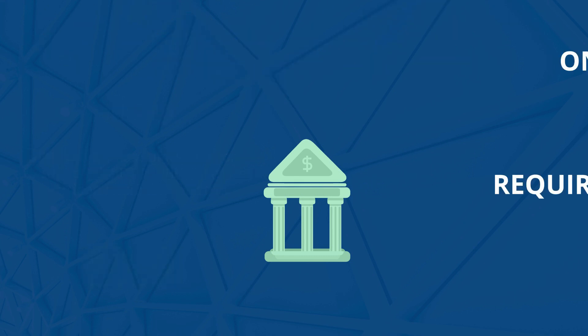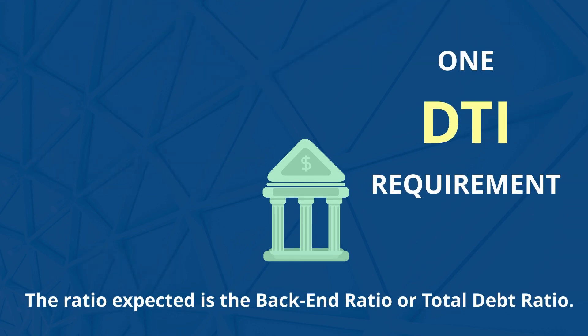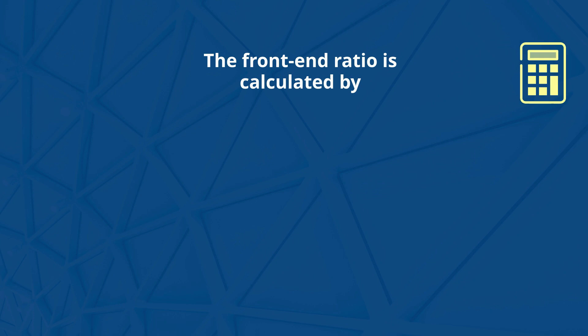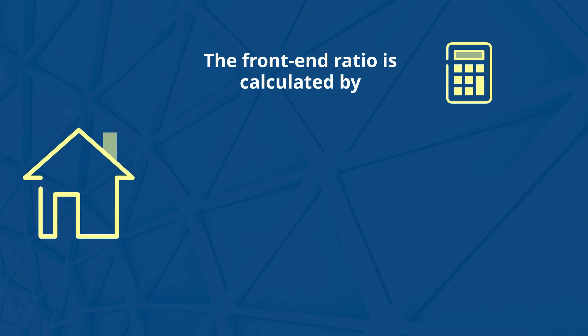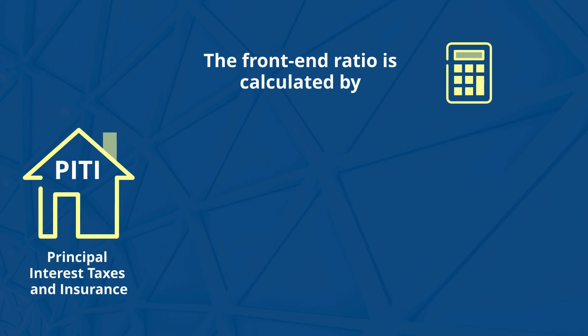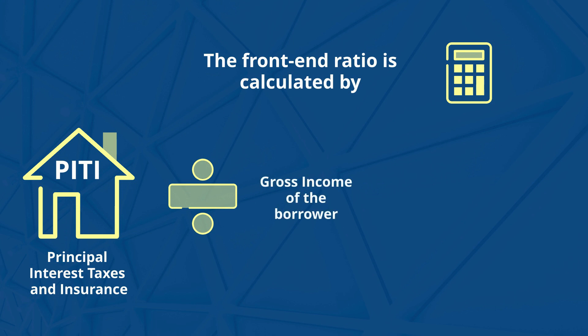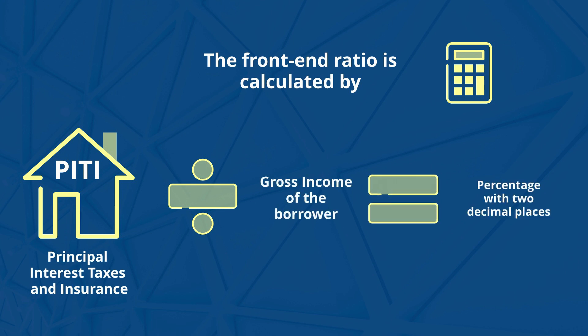If the loan program has only one DTI requirement, the ratio expected is the back-end ratio or total debt ratio. The front-end ratio is calculated by taking the total housing expense — PITI: principal, interest, taxes, and insurance — and dividing it by the gross income of the borrower. The answer is a percentage with two decimal places. Note that most automated underwriting systems only use the back-end ratio, or total debt ratio, and not the front-end debt ratio.